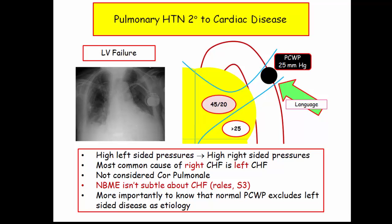High left-sided pressures cause high right-sided pressures, and this is the most common cause of right-sided heart failure. Right heart failure secondary to left heart failure is not considered cor pulmonale. The NBME is not subtle about congestive heart failure — the physical exam will mention the presence of an S3 gallop as well as rales. When they mention clear lungs, it will not be left heart failure. If they offer you a normal pulmonary capillary wedge pressure, the patient does not have congestive heart failure.